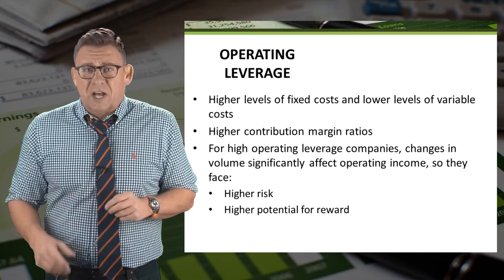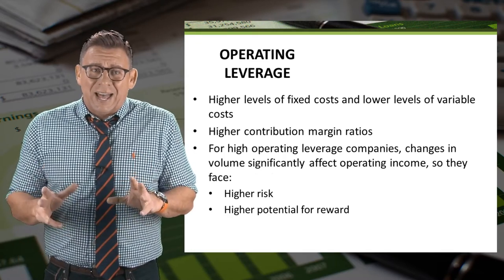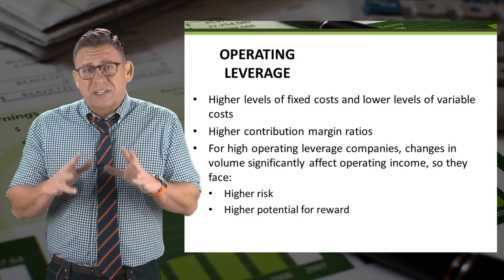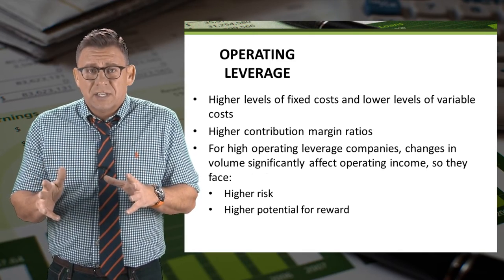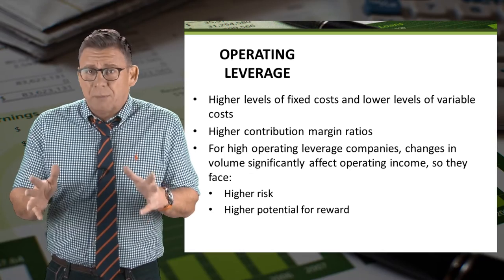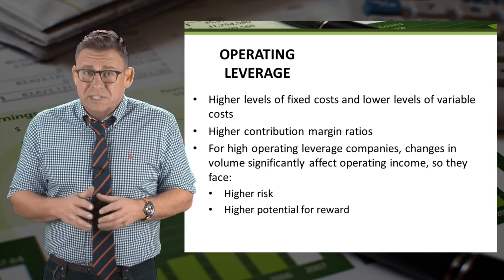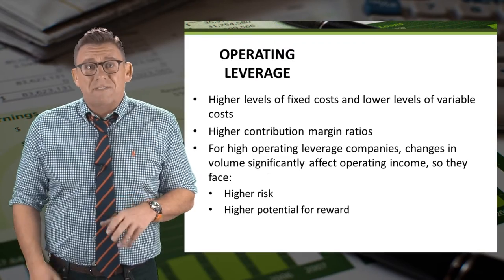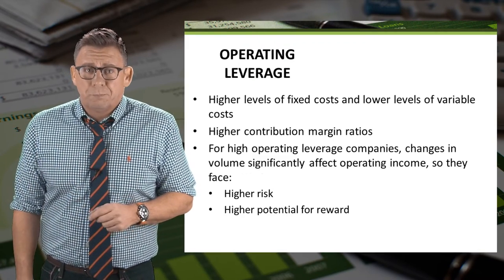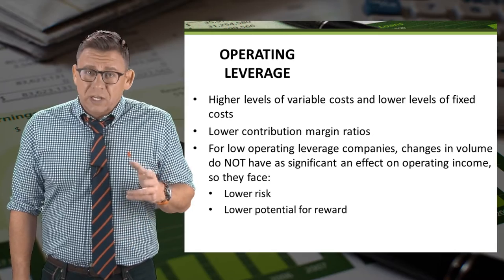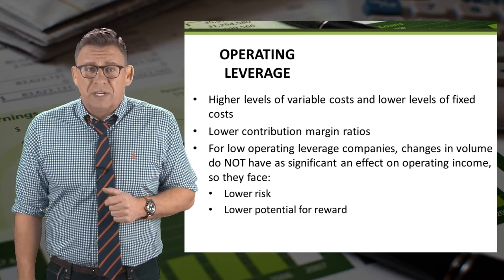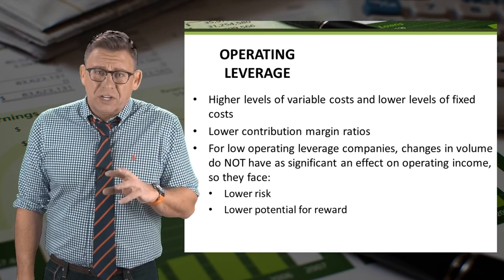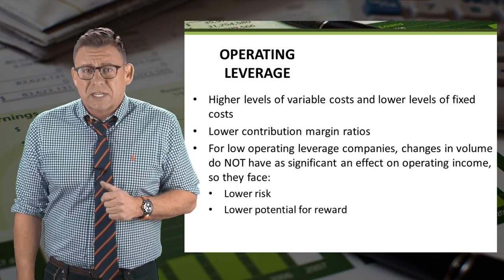Firms with large fixed costs have high operating leverage, so a small increase in sales can have a big increase in operating income. But the opposite is also true — a small decrease in sales could have a big decrease in operating income. Firms with little fixed costs have low operating leverage, so small increases or decreases in sales have small impacts on operating income.